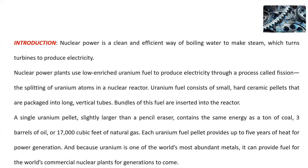Nuclear power is a clean and efficient way of boiling water to make steam, which turns turbines to produce electricity. In thermal power plant, coal is fed directly to the boiler. In a nuclear power plant, there are two circuits — a primary circuit and a secondary circuit. The heat from the nuclear energy is used in the secondary circuit to convert water into steam. Nuclear power plants use the energy of uranium fuel to produce electricity through a process called fission, which involves splitting of uranium atoms into two or more smaller nuclei, releasing a huge amount of energy.